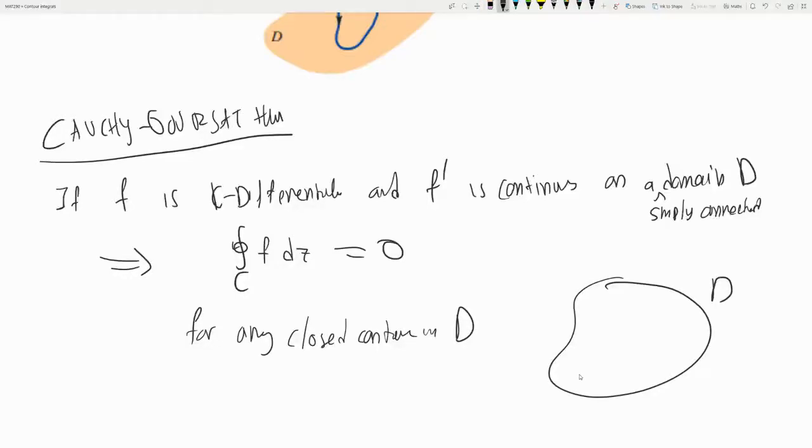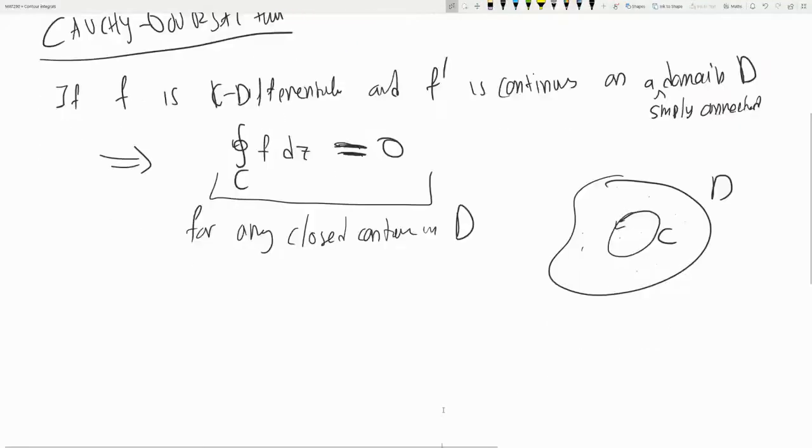So this is D and this is the contour. So if the function has no poles in the domain D, then Cauchy-Goursat says that the contour will be zero. Okay, so let's prove this.